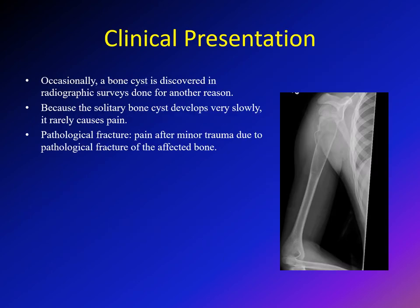Simple bone cysts are sometimes discovered incidentally on x-ray taken for a different reason, as most of the time they are asymptomatic because they grow very slowly and usually do not cause pain. The most common symptomatic presentation is pain due to pathological fracture. For example, a child playing baseball or jumping in a pool suddenly develops severe arm pain. On x-ray you will find the simple bone cyst, the replaced bone tissue, the pathological fracture, and the fallen leaf sign we will discuss with imaging.